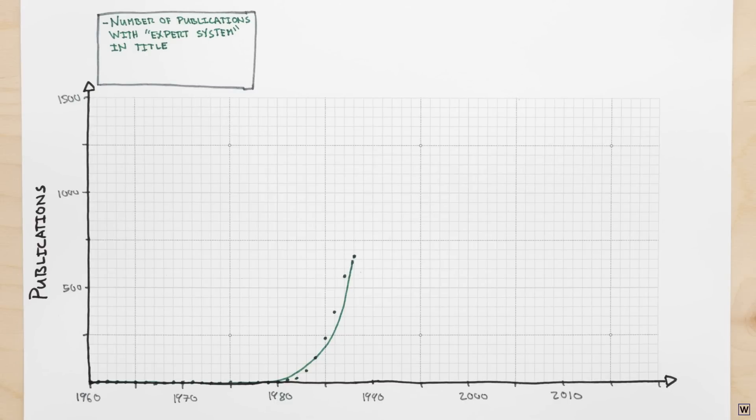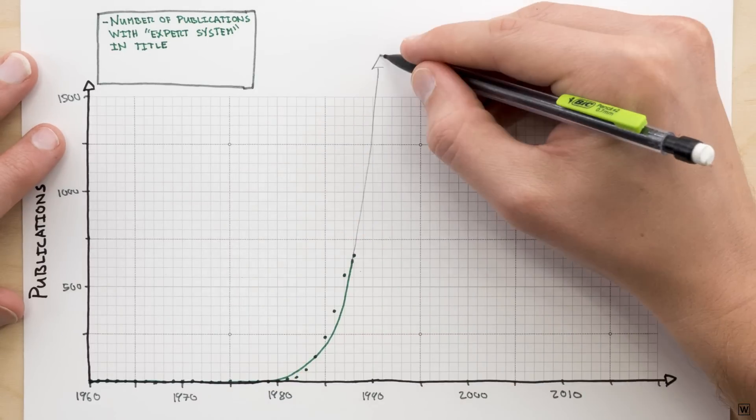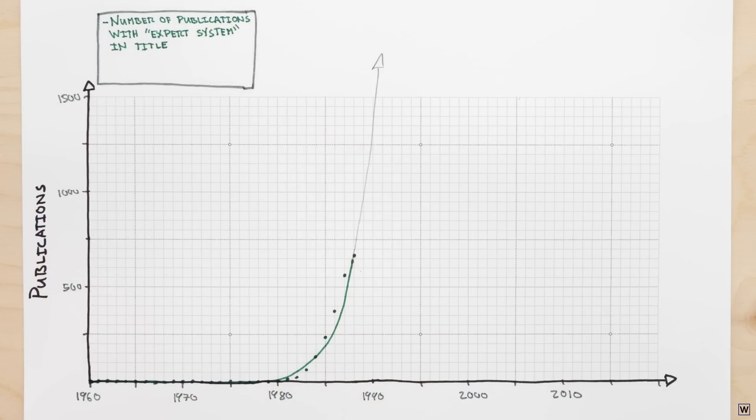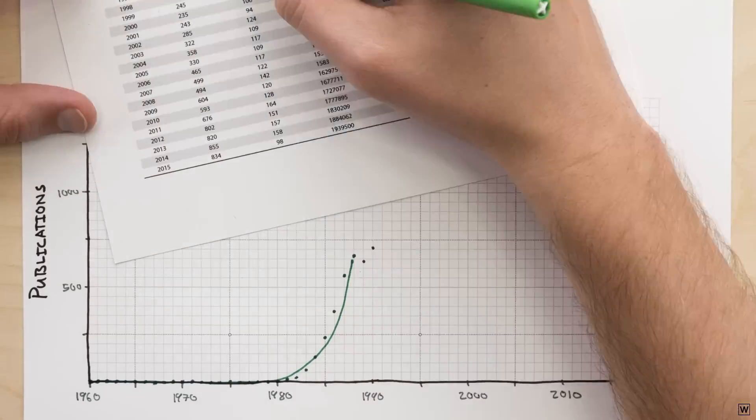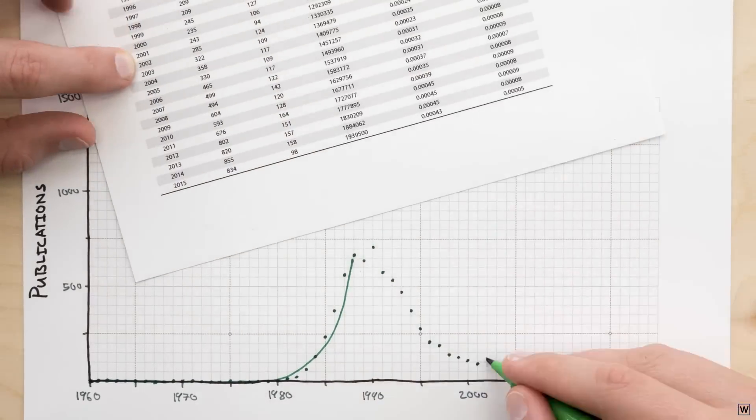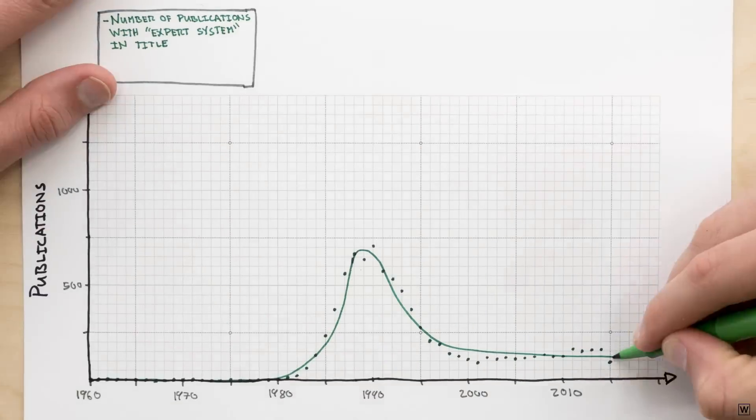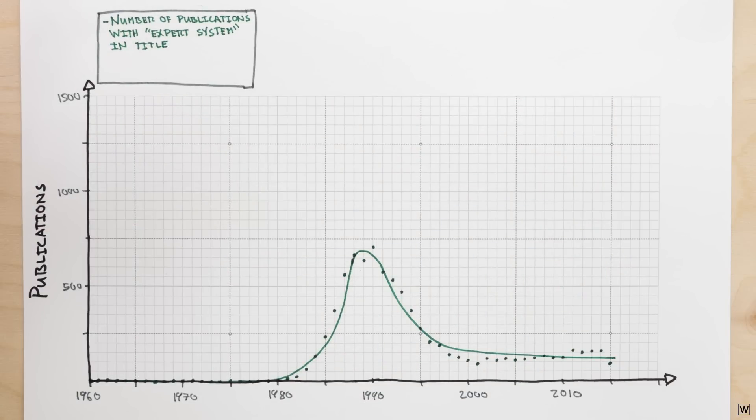And like all periods of economic boom fueled by dramatically overhyped advances in technology, the expert systems of the 1980s continued to grow indefinitely without any problems. Just kidding. The market for expert systems and the companies that sold them evaporated in the late 80s. So what went wrong here? What made the market for expert systems disappear?